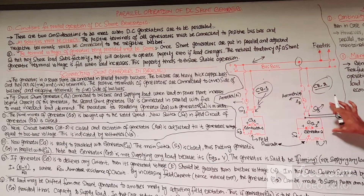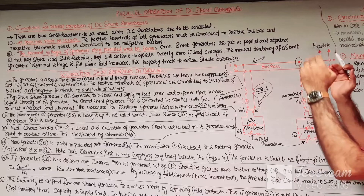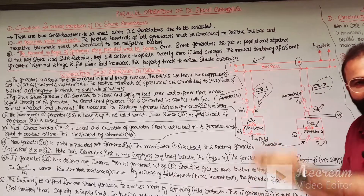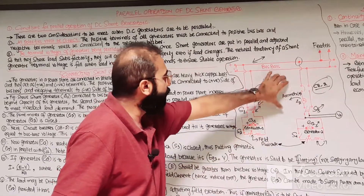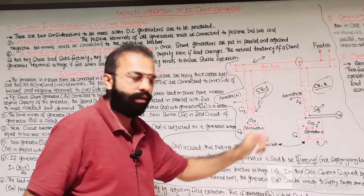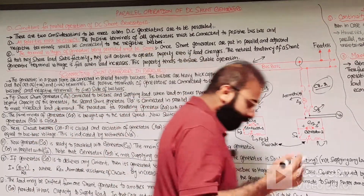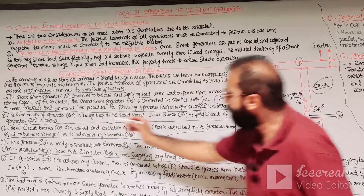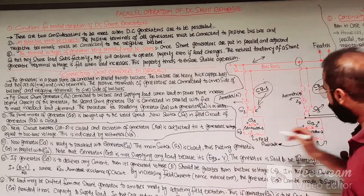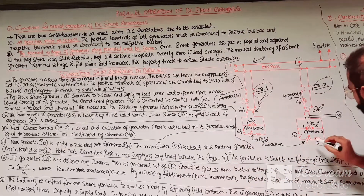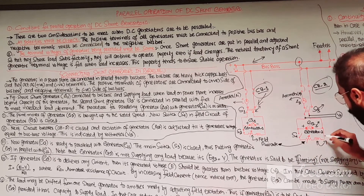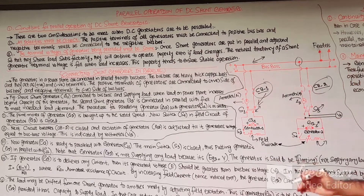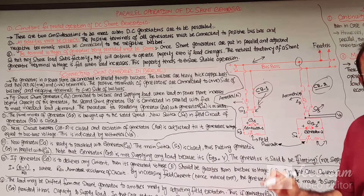The following steps describe how G2 generator is connected in parallel with G1. First, the prime mover of the G2 generator is brought up to the rated speed. Then switch S4 of the field circuit of the G2 generator is closed. This is the first step.